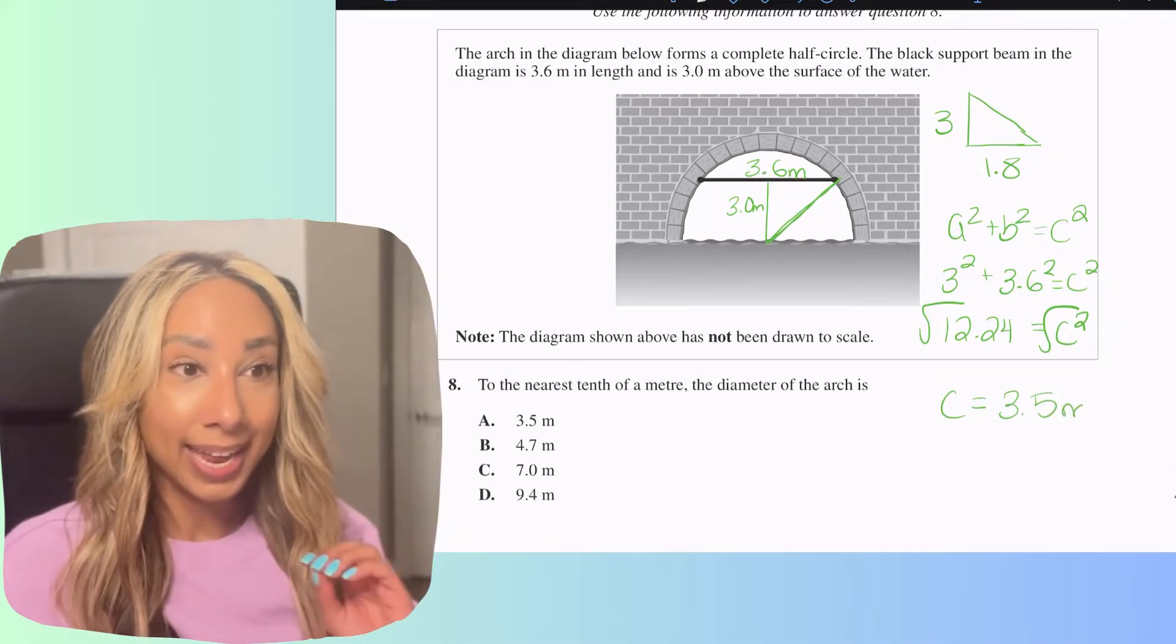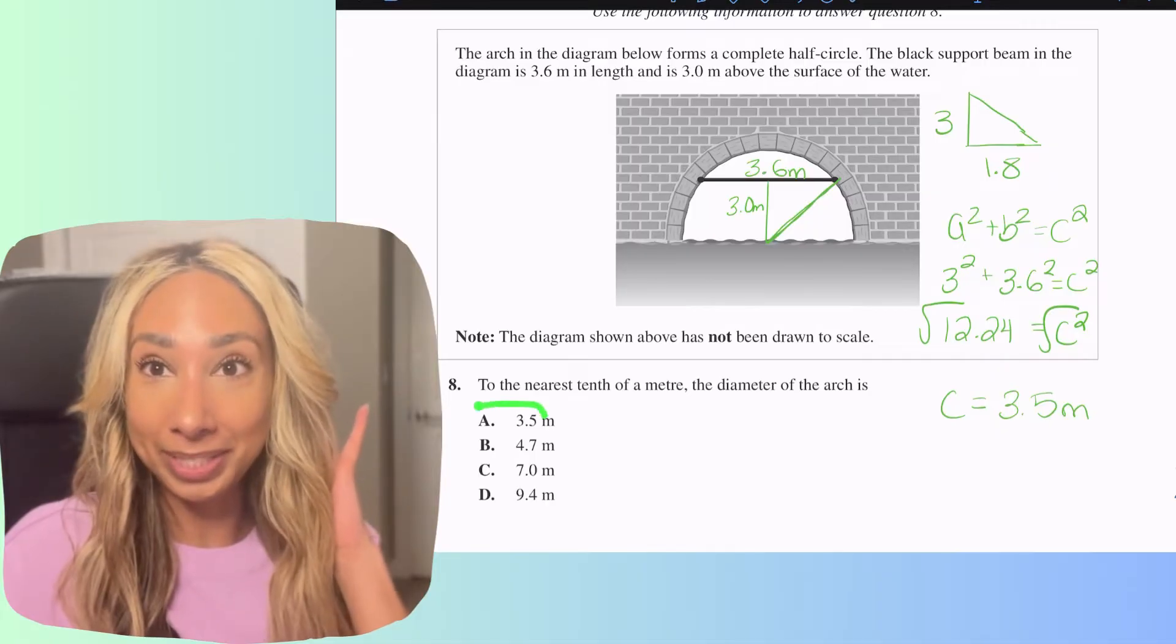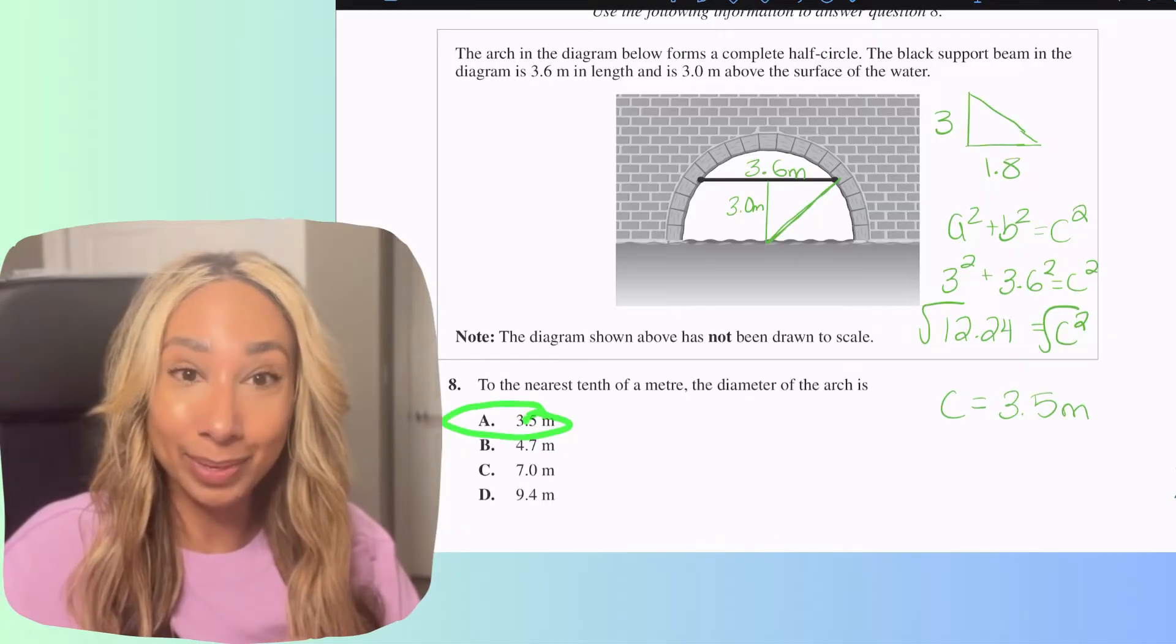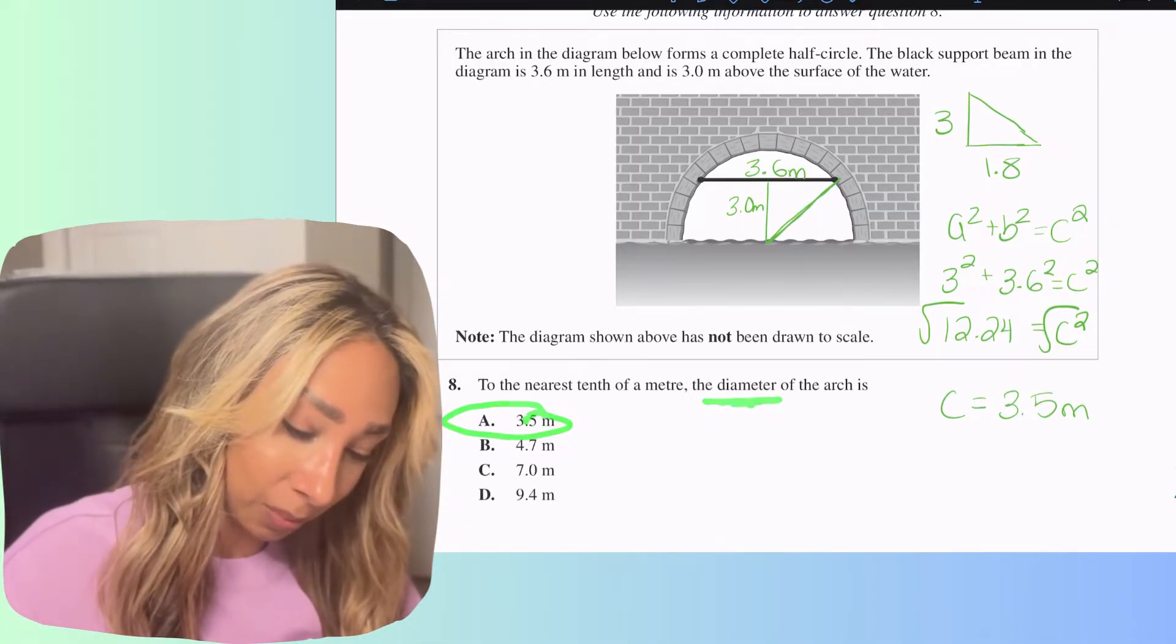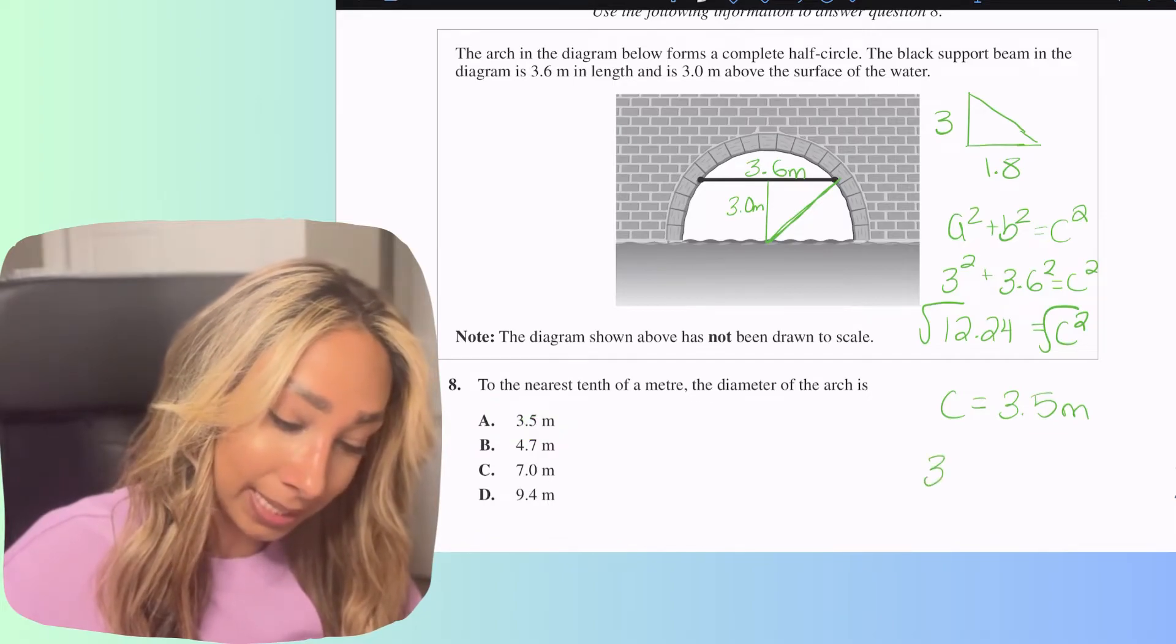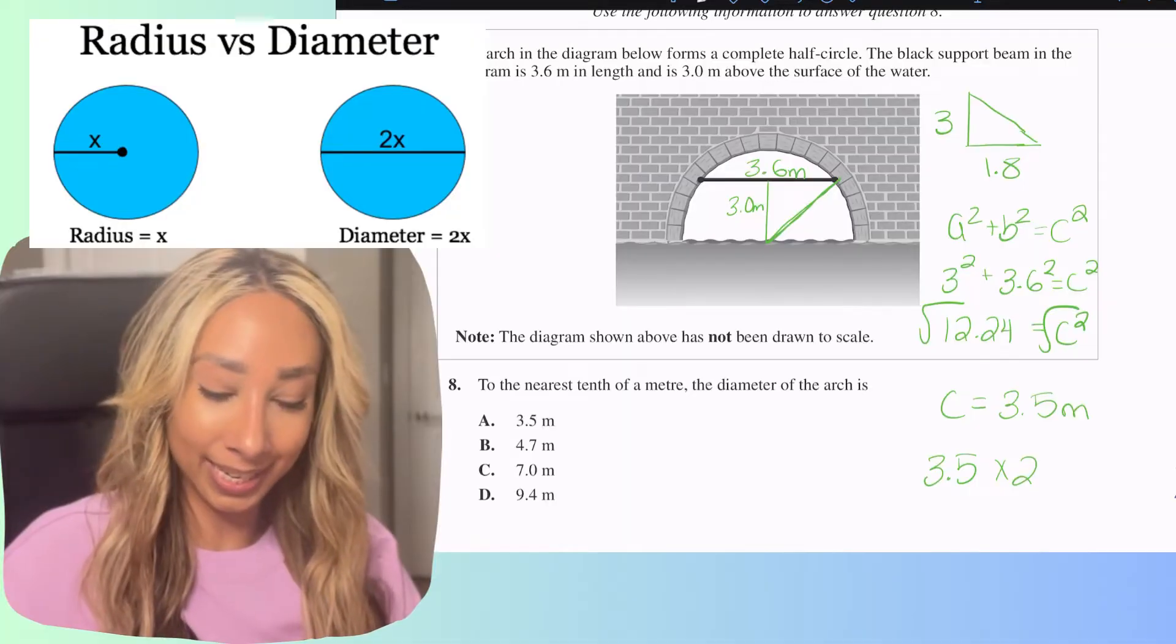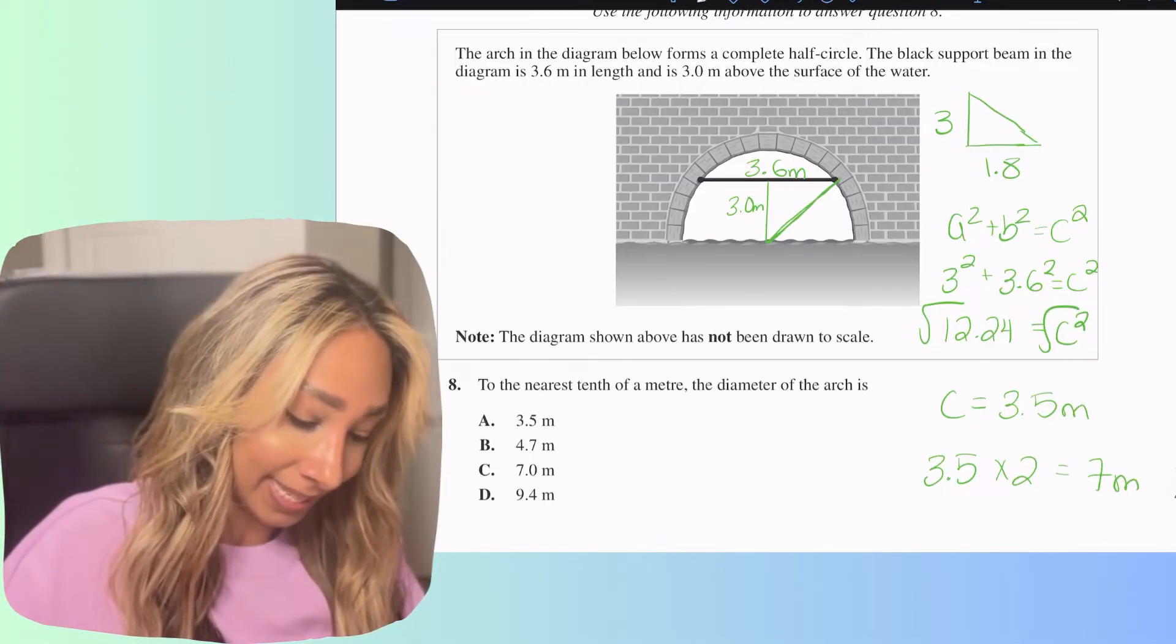Okay now here's the thing, I'm sure most of you were tempted to write the answer as a, but remember the question is asking us for the diameter, okay, not the radius. So what we need to do is take that 3.5 and we need to double it to get our diameter. When I double it that's going to give me 7 meters, meaning our diameter is 7 meters.